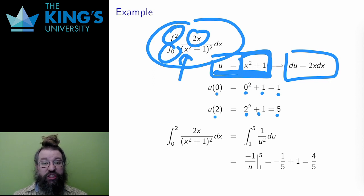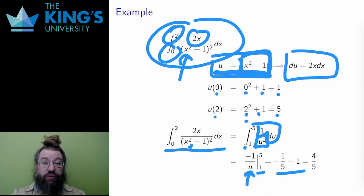Then I can change the whole integral. The new bounds are 1 to 5. The 2x dx in the numerator becomes du. And the x squared plus 1 in the denominator becomes u, to make this an integral of 1 over u squared. I integrate this with the inverse power rule. The antiderivative is negative 1 over u. And I evaluate this on the bounds, being careful with the signs. The result is negative 1 fifth plus 1, which is 4 fifths.